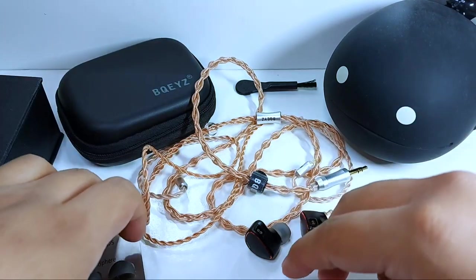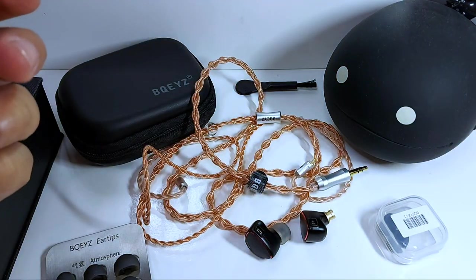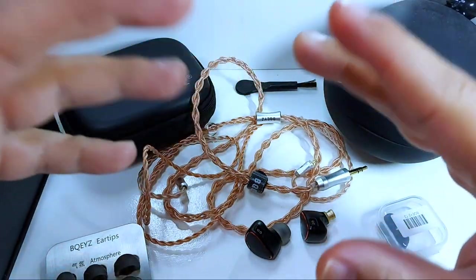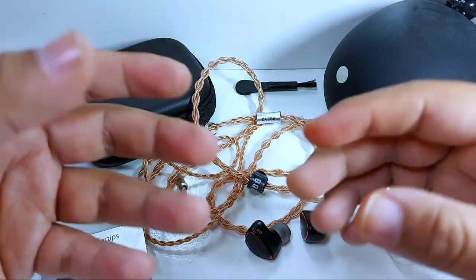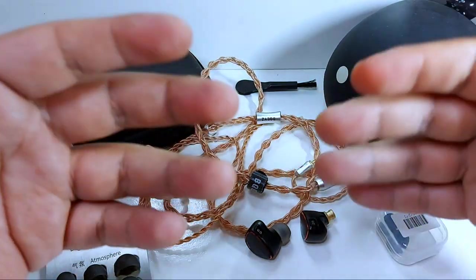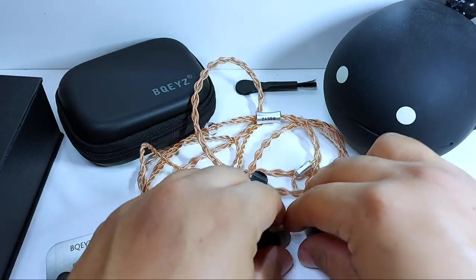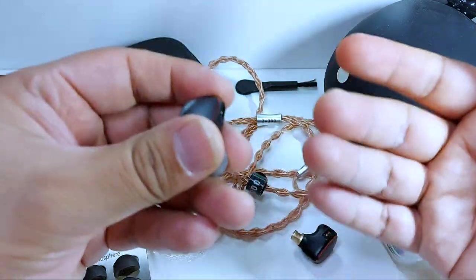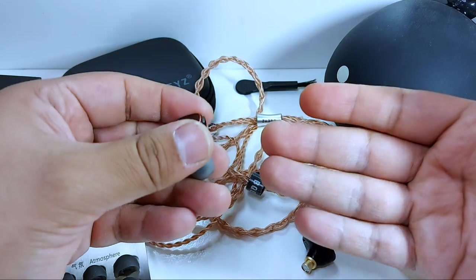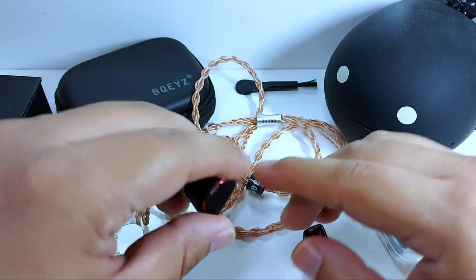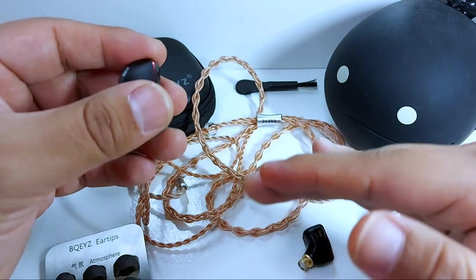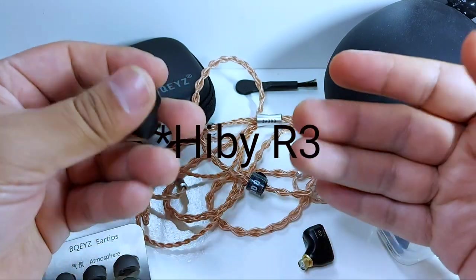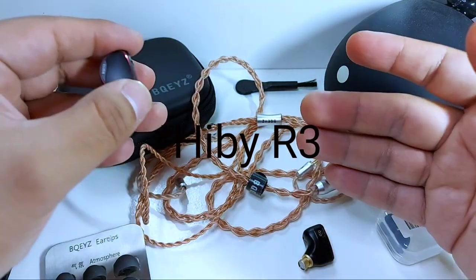La ventaja de este cable es que al mismo tiempo que lo llegas a comprar puedes elegir si quieres que sea un cable de 3.5 milímetros o con terminación balanceada, ya sea de 2.5 o 4.4 milímetros Pentacon. Entonces creo que en este punto está excelente que tengamos precisamente estas opciones. Y por último las puntas de memory foam. Ya conocemos cuál es su función: el hecho de incrementar un poco las frecuencias graves y amortiguar un poco las frecuencias altas, que a mi parecer no es necesario. Cada frecuencia está en su punto, como lo vamos a ver más adelante.